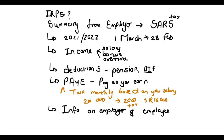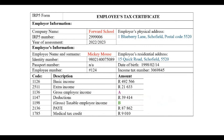Now let's go back to the IRP-5 form. We start with the employer's information — usually the company name; here it's some private school. There's also an IRP-5 number, just an identification number. Then the year of assessment: this one runs from 2022, starting 1 March, ending in 2023 on the 28th — or possibly 29th — of February. We also see the employer's physical address.